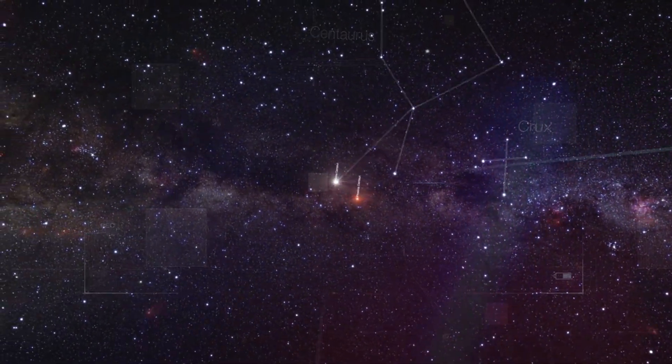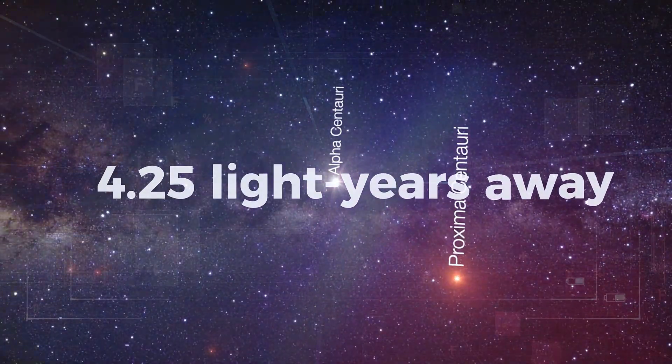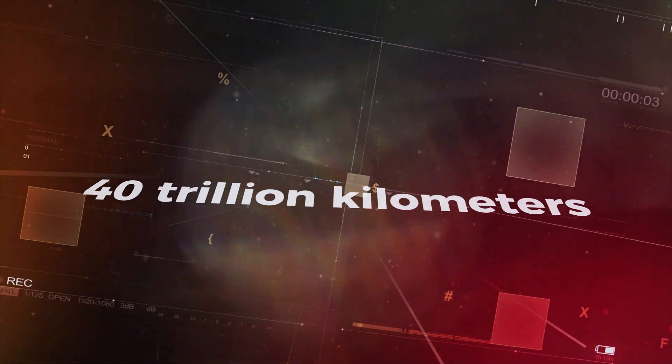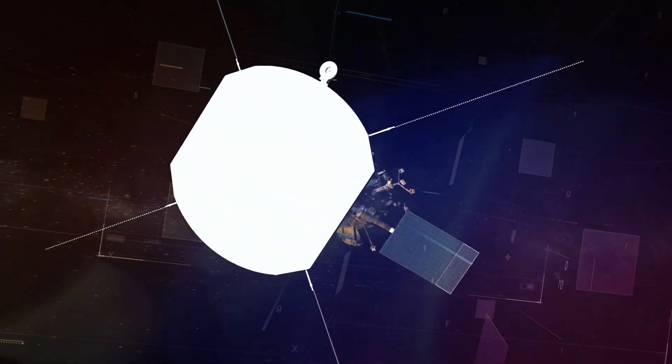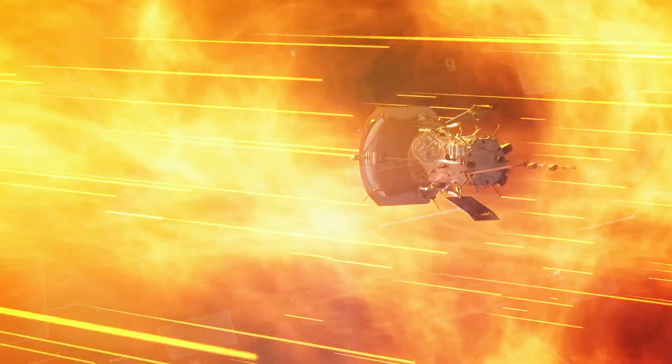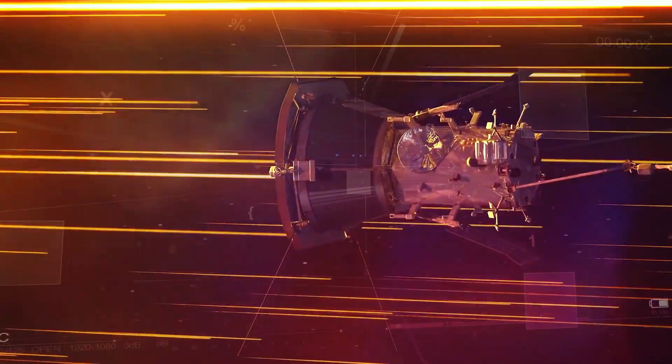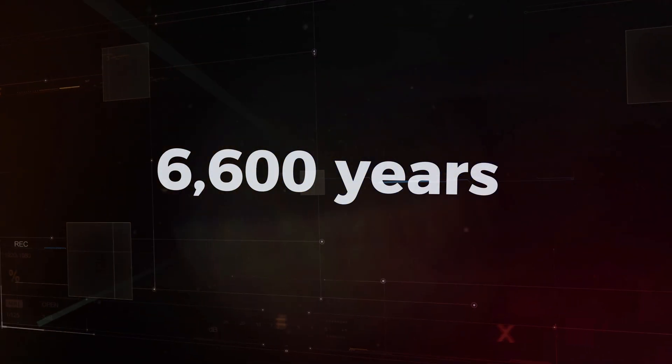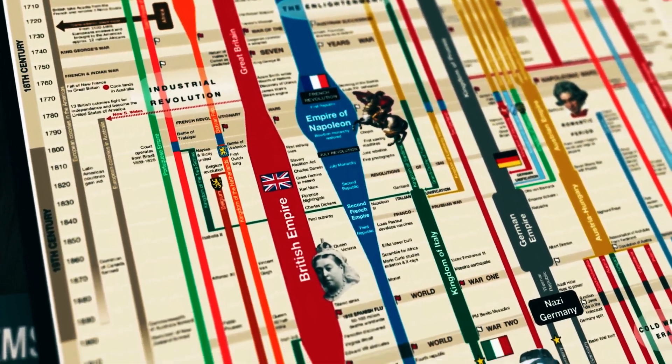The closest star to Earth, Proxima Centauri, is 4.25 light years away. That's about 25 trillion miles or 40 trillion kilometers. If you hopped on the fastest spacecraft humanity has ever built, the Parker Solar Probe, traveling at a record-breaking 430,000 miles per hour, it would take you over 6,600 years to get there. That's longer than all of recorded human history.